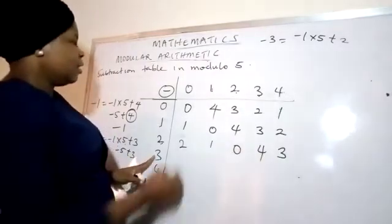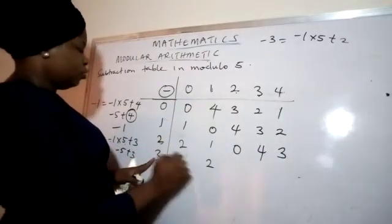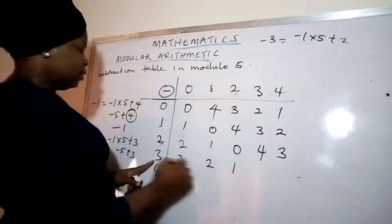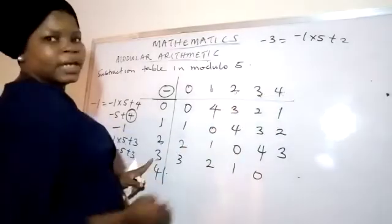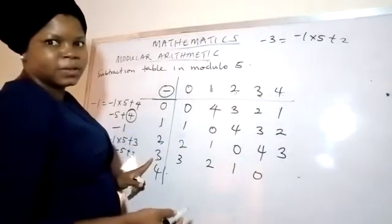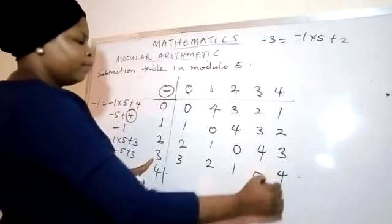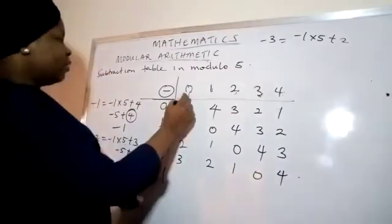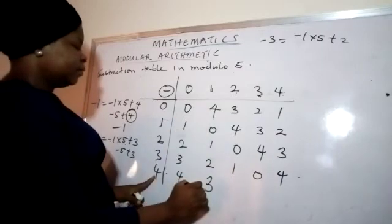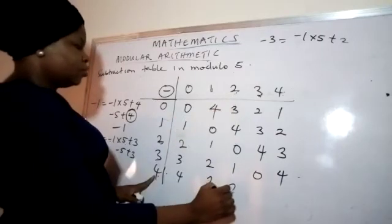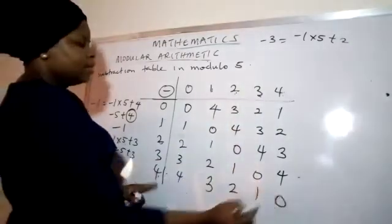3 minus 0 is 3, 3 minus 1 is 2, 3 minus 2 is 1, 3 minus 3 is 0, 3 minus 4 is minus 1 — the positive equivalent is 4. Then: 4 minus 0 is 4, 4 minus 1 is 3, 4 minus 2 is 2, 4 minus 3 is 1, 4 minus 4 is 0.